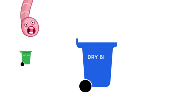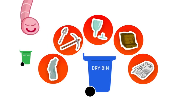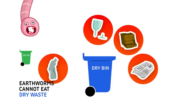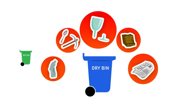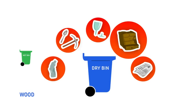And this is a dry bin. It is always blue in color. Here, we throw all things made by humans. Things that cannot be eaten by earthworms, like plastic, metal, glass, wooden furniture, and even paper.